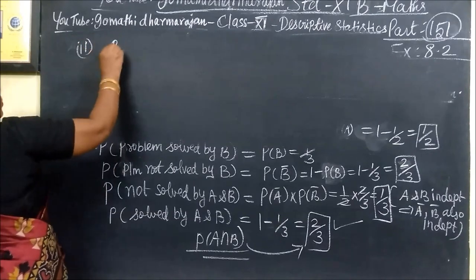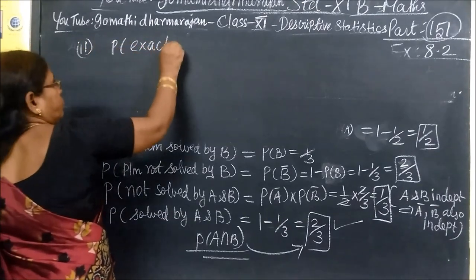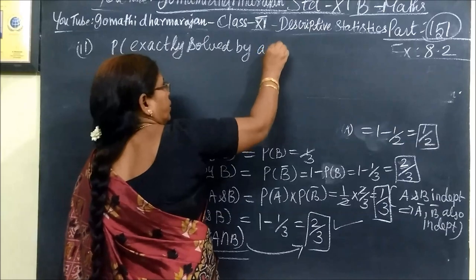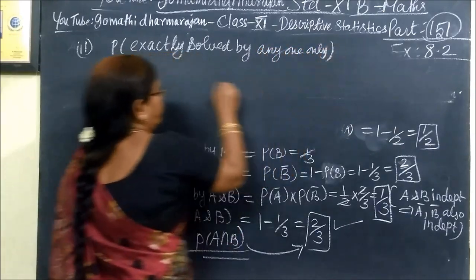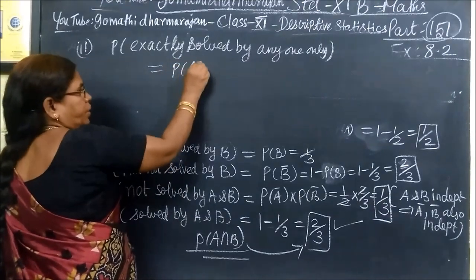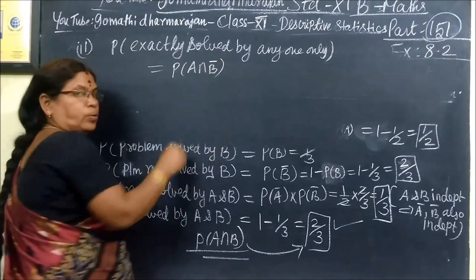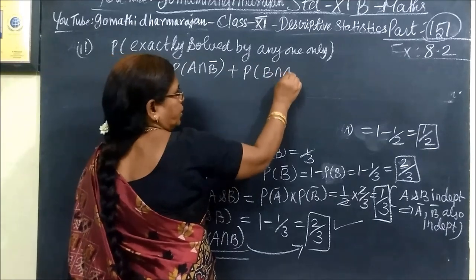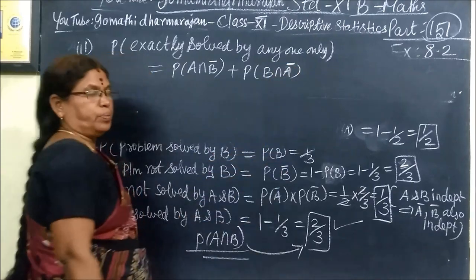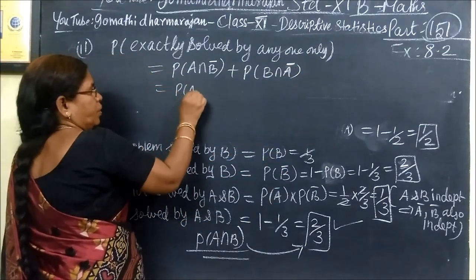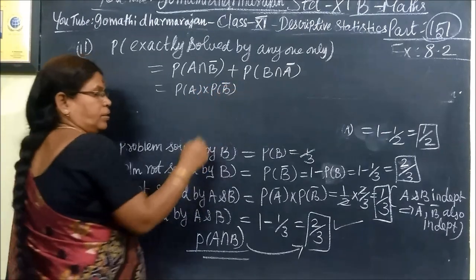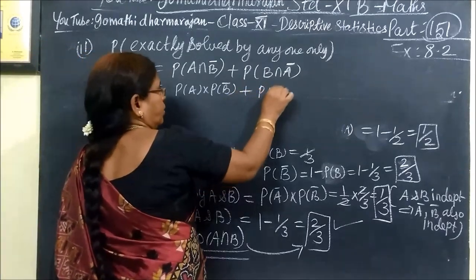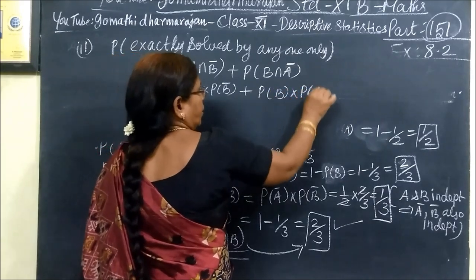Second part, probability of exactly solved by anyone, anyone only. A between A and B. So the formula we will prepare: A into B bar or B into A bar by anyone. A, B, A bar, B bar, all may be independent. Question is okay.